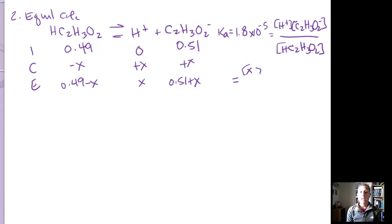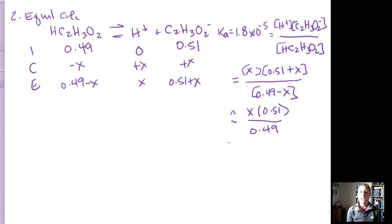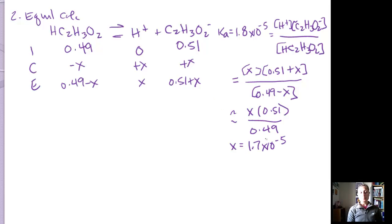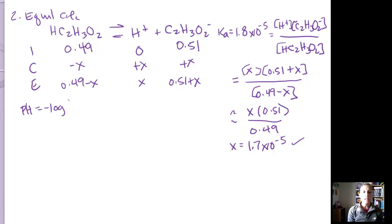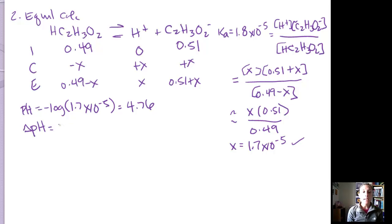Plugging into Ka: 1.8 × 10⁻⁵ equals X times (0.51 plus X) divided by (0.49 minus X). Making our approximations, that gives us X times 0.51 divided by 0.49, yielding an X value of 1.7 × 10⁻⁵. The approximation checks out. So the pH equals negative log of 1.7 × 10⁻⁵, giving us 4.76. The change in pH is 4.76 minus 4.74 — the original buffered solution pH — giving us a change of only 0.02.